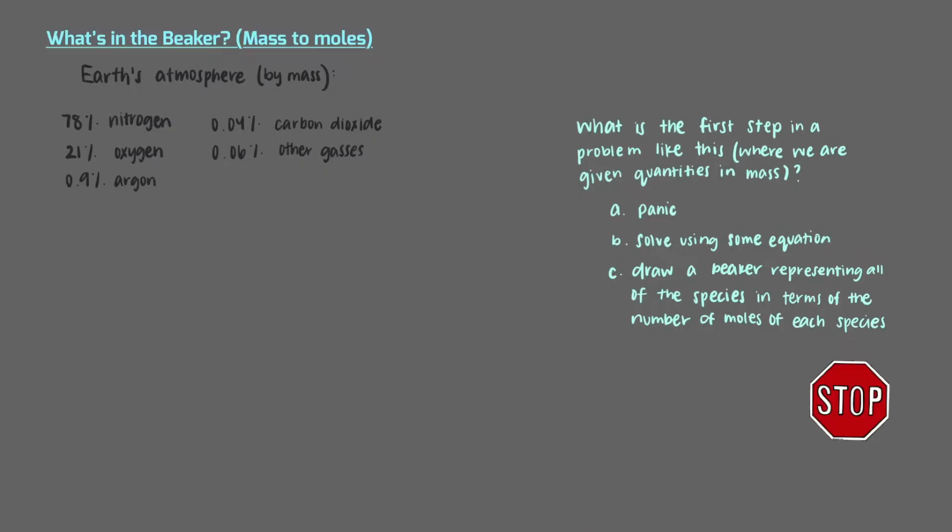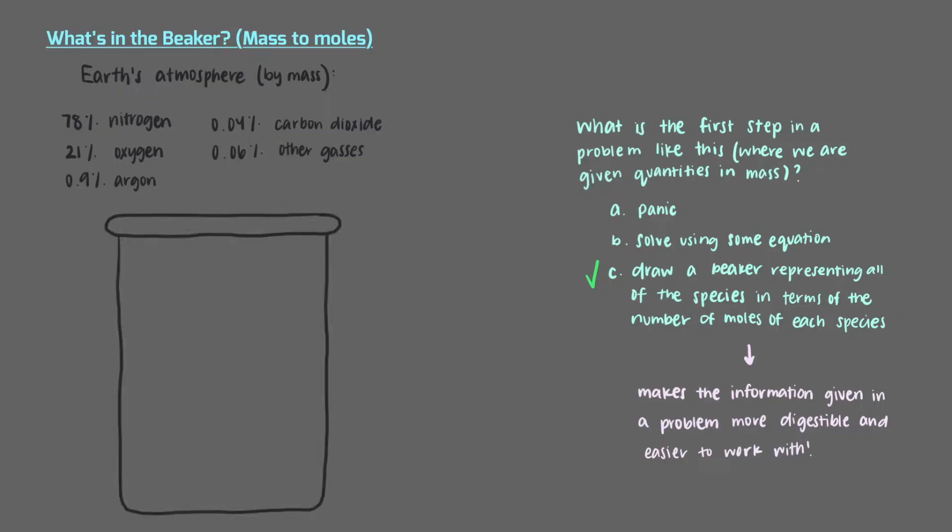So what is the first step in a problem like this, where we are given quantities in mass? Drawing a beaker is always the first step. This word problem is really long and has a lot of information in it, so we should make it more digestible and easier to work with. Let's set up a beaker that contains all of the information in the problem. But remember that beakers always have moles in them, so we need to know how many moles of each substance is present before we can do anything else.